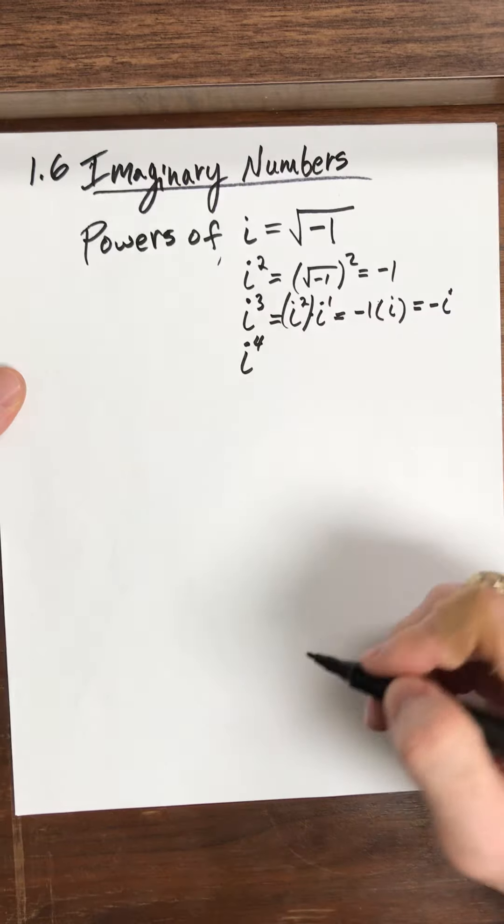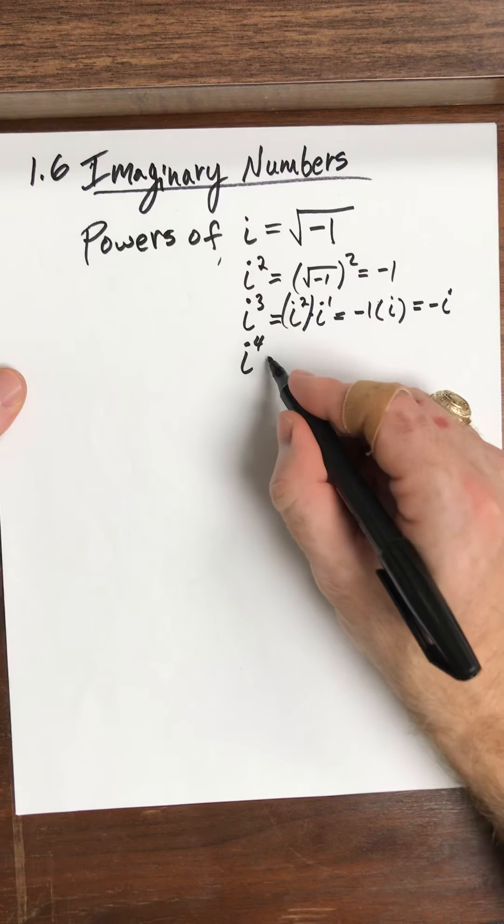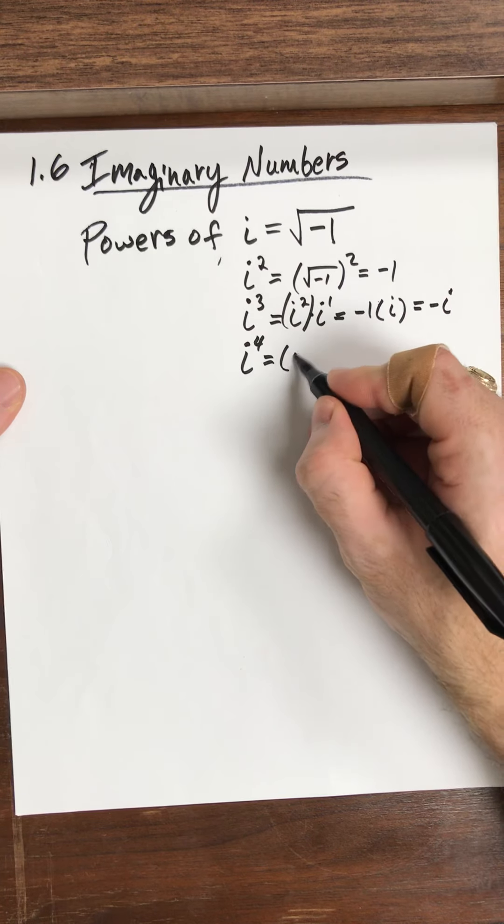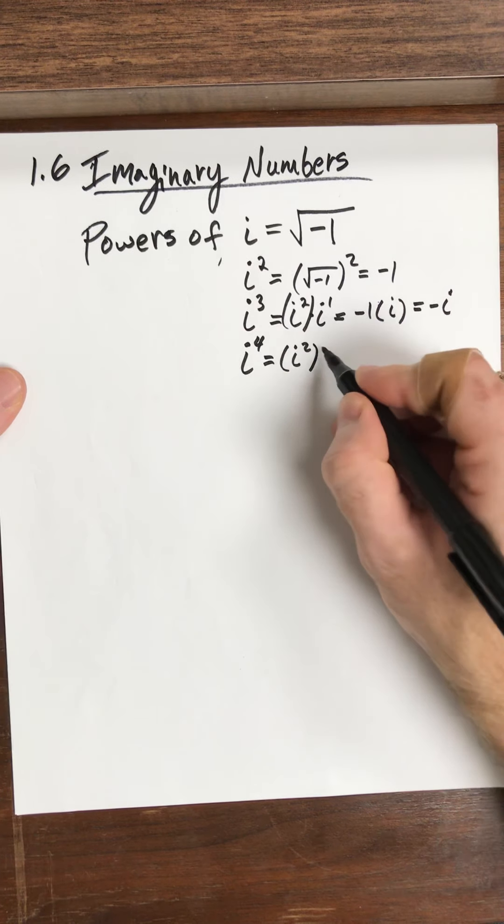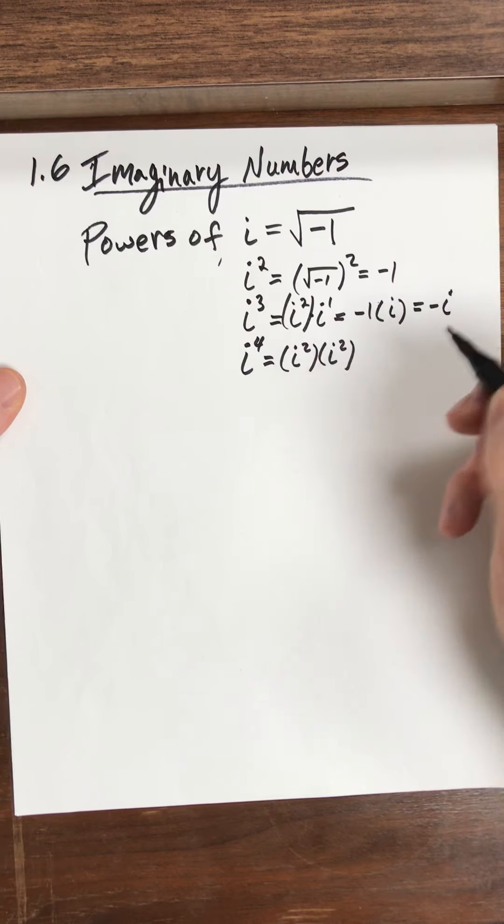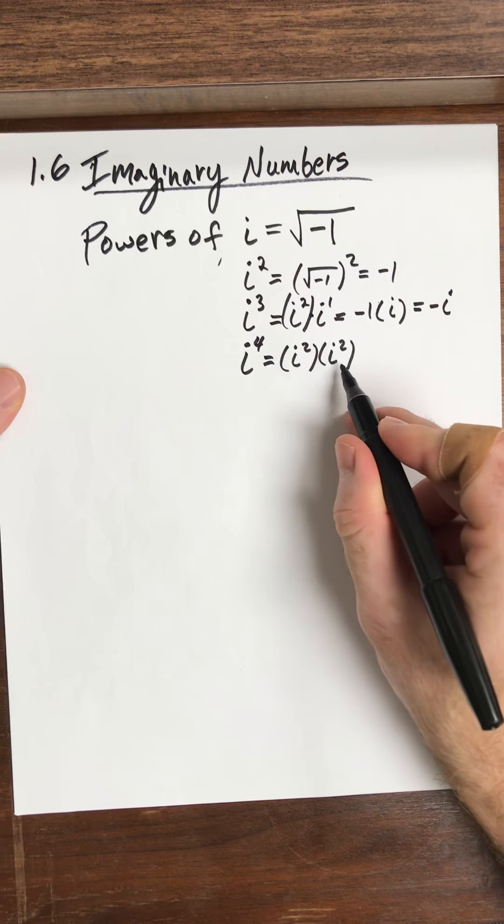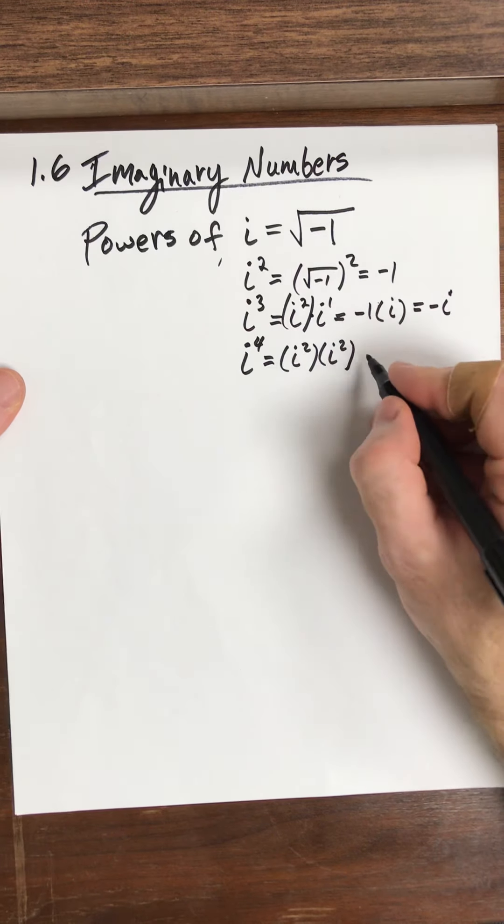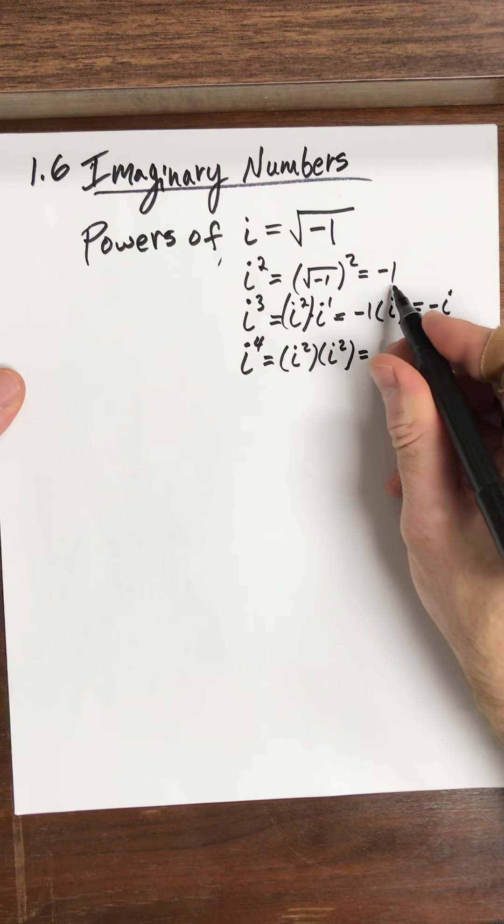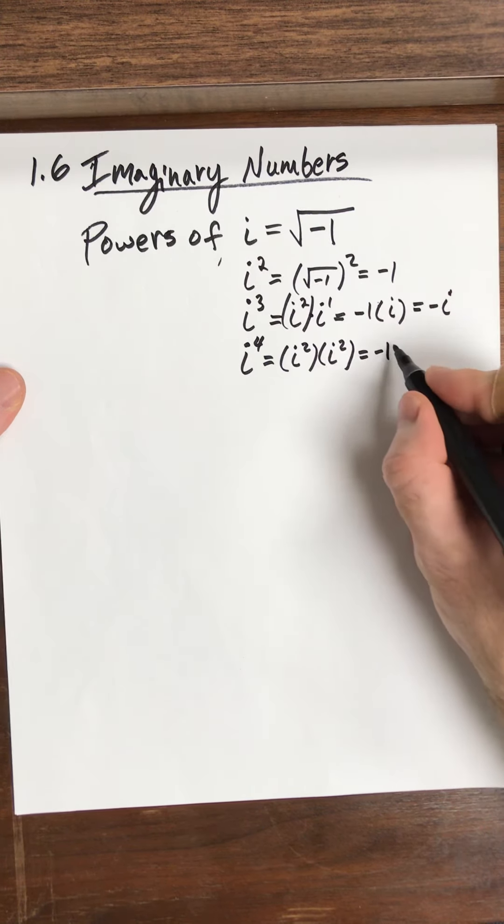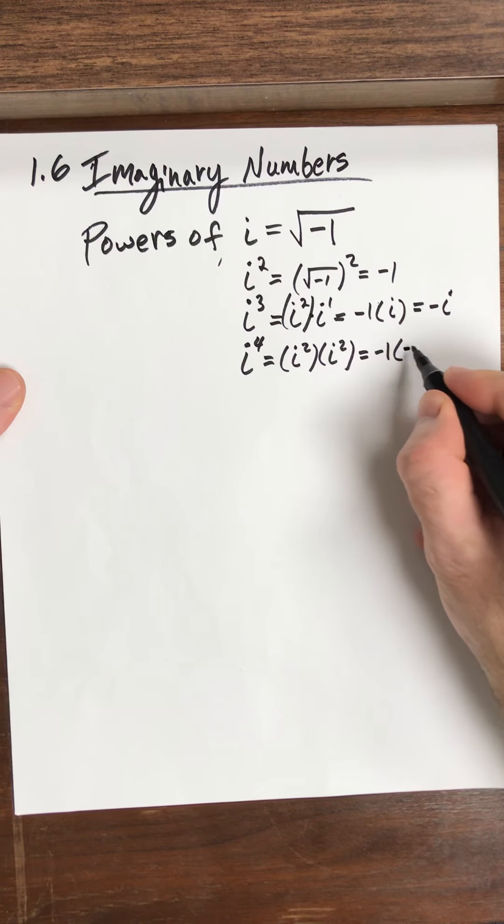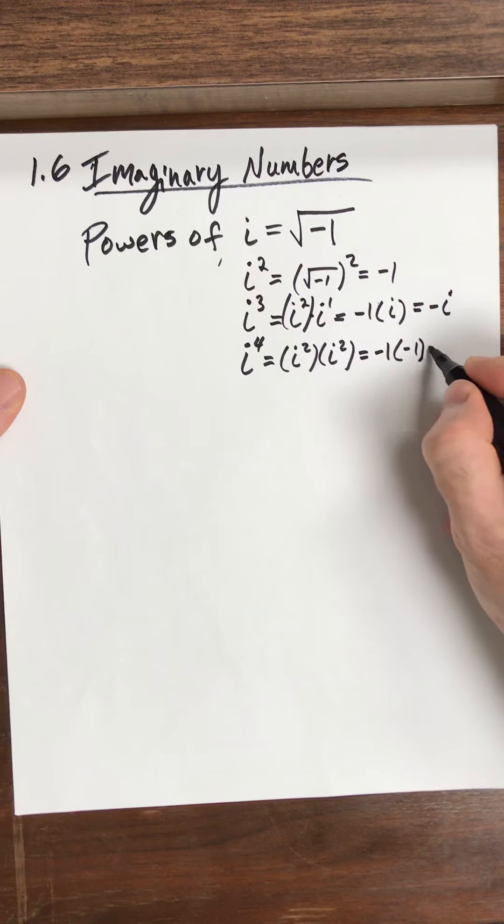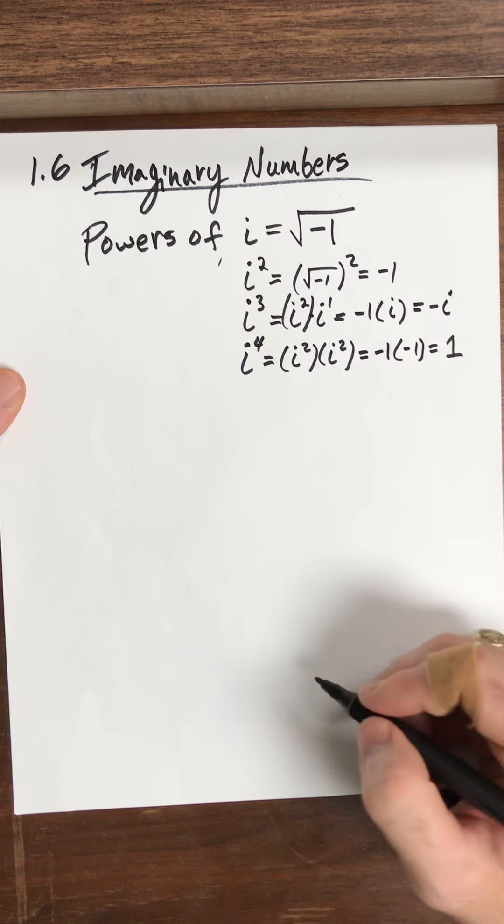i to the fourth, i to the fourth, we can break this up. I can break it up to i squared times i squared. i squared and i squared, that's four i's total, that's i to the fourth right there. So i squared, once again, this is negative 1 times negative 1. Negative 1 and negative 1 make a positive 1.